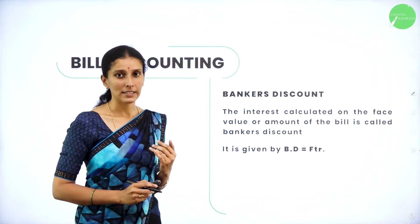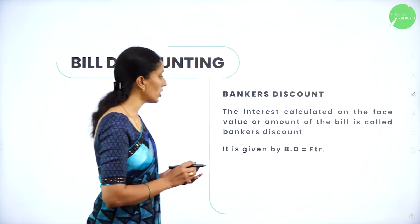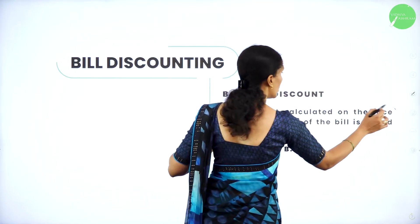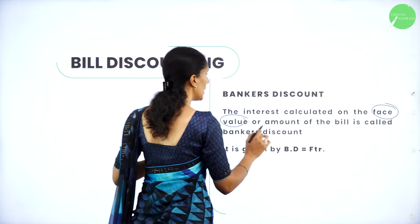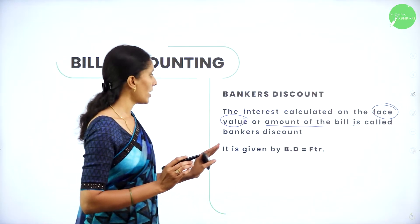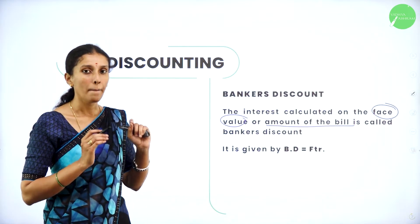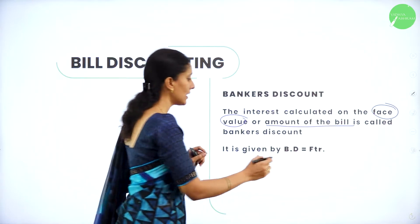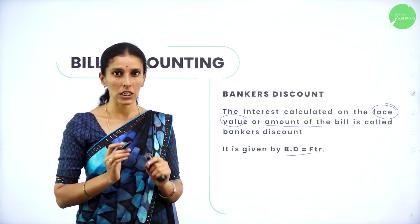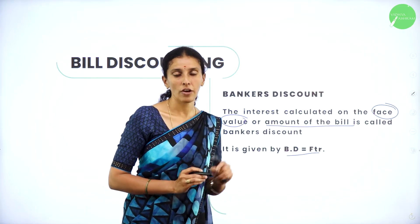Next is banker's discount. What is banker's discount? It is the interest calculated on the face value or the amount of the bill. Whatever value is represented in the bill is your face value. So the interest calculated on the face value is your banker's discount, given by the formula BD = FTR, where F is face value, T is time period, and R is rate of interest.